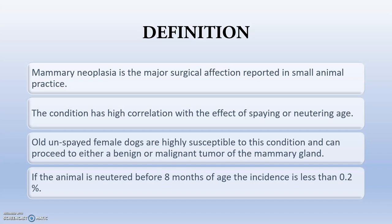Mammary neoplasia is the major surgical affection reported in small animal practice. The condition has high correlation with the effect of spaying or neutering age. Old unspayed intact female dogs are highly susceptible and can develop either a benign or malignant tumor of the mammary gland. Benign tumors do not have a metastatic effect, whereas malignant tumors do. If the animal is neutered before 8 months of age, the incidence is less than 0.2% — highlighting the ill effects of continued exposure of mammary glands to estrogen.